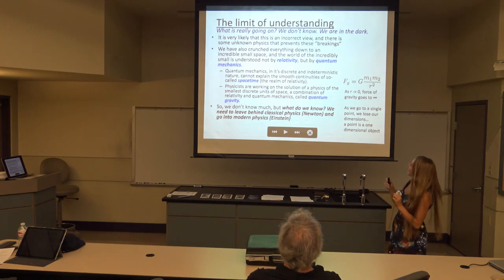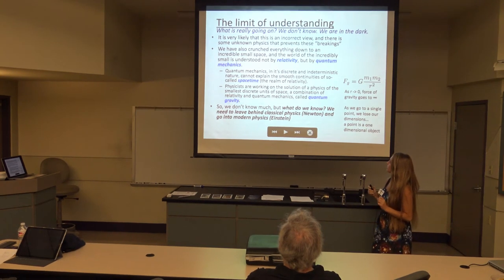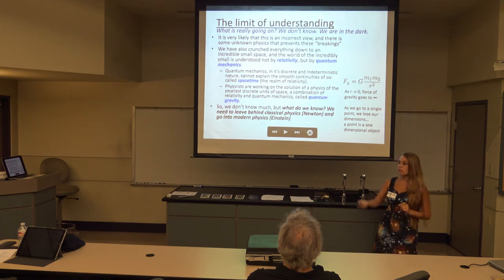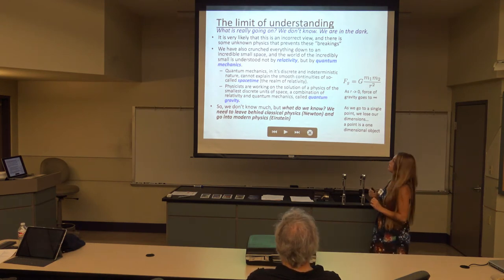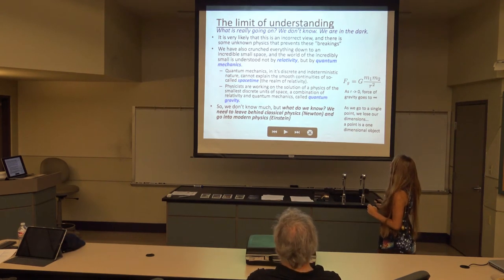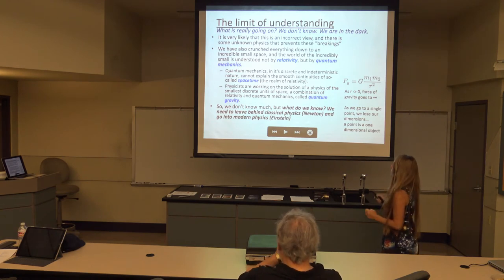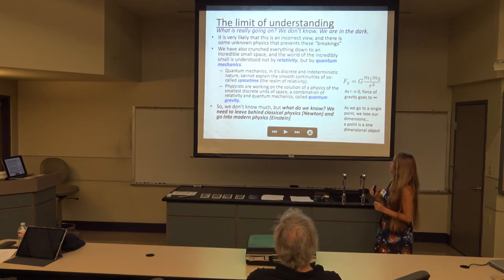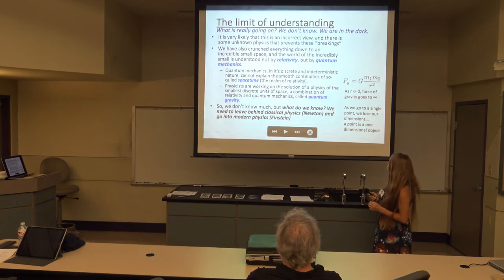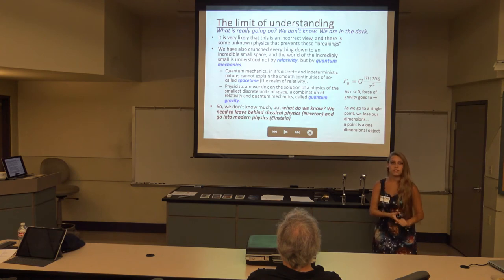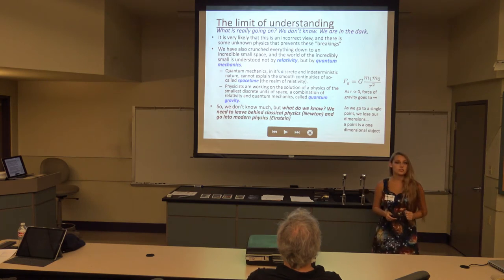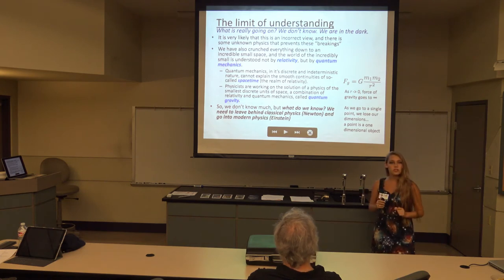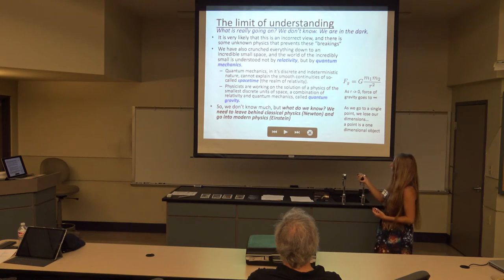We have also crunched everything down to an incredibly small space, and the world of the incredibly small is understood not by relativity but by quantum mechanics. Quantum mechanics and its discrete, indeterminate nature cannot explain the smooth, continuous space-time of the realm of relativity. Physicists are working on a physics of the smallest discrete units of space — a combination of relativity and quantum mechanics called quantum gravity. This is the frontier of human understanding. To understand things outside our realm on Earth, we need to go beyond Newton and look towards Einstein.